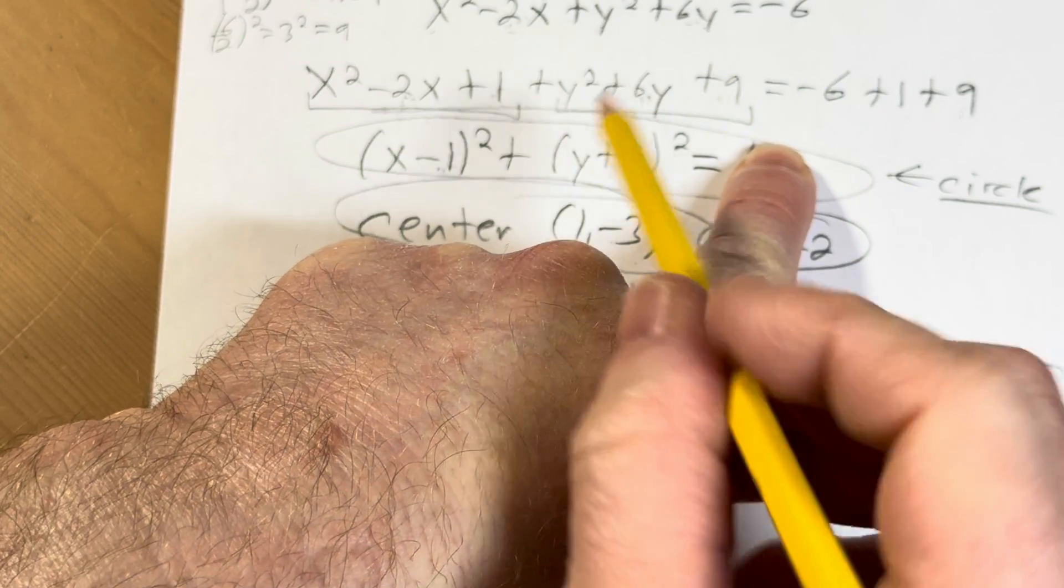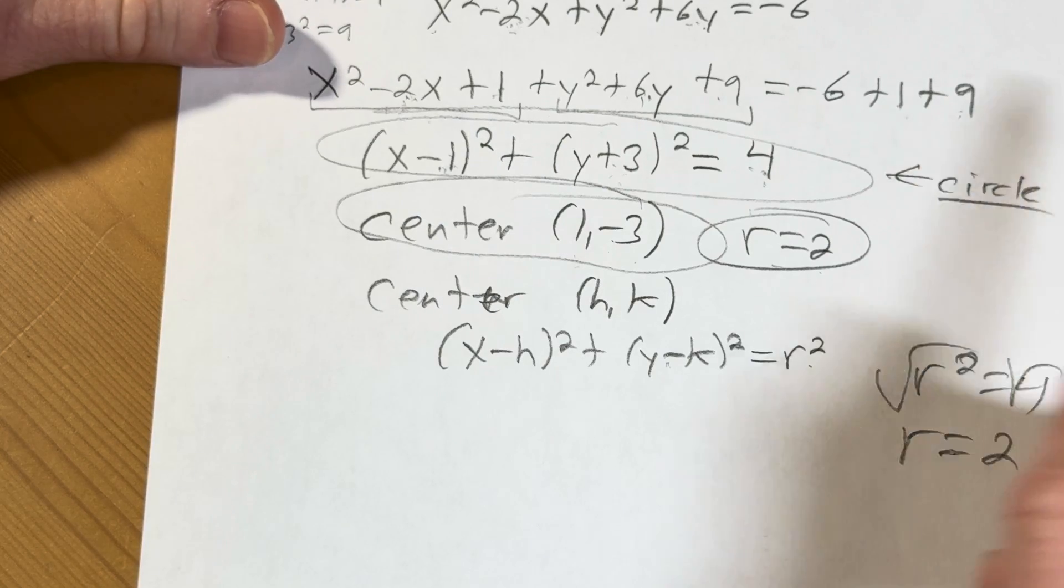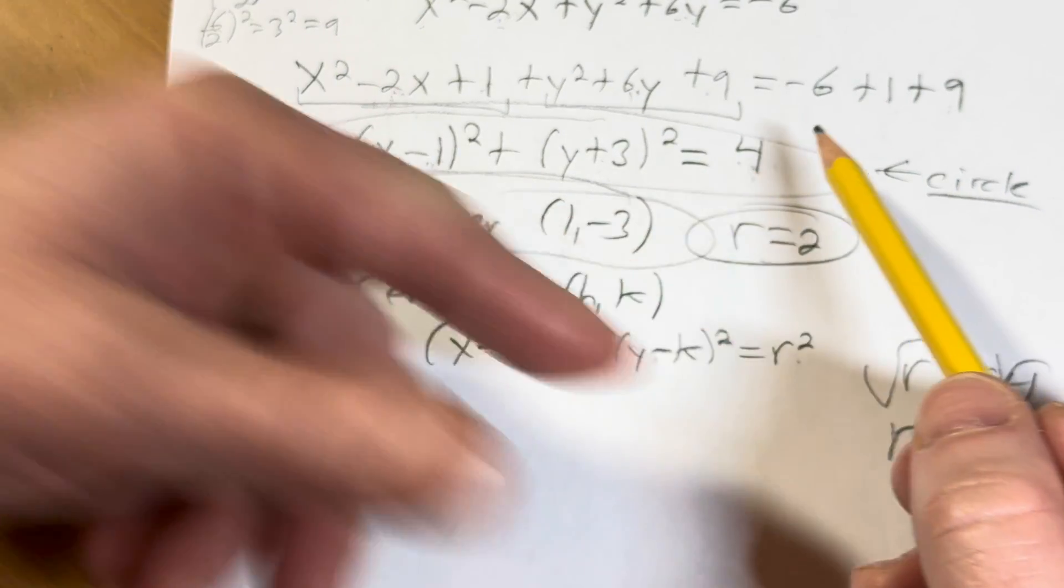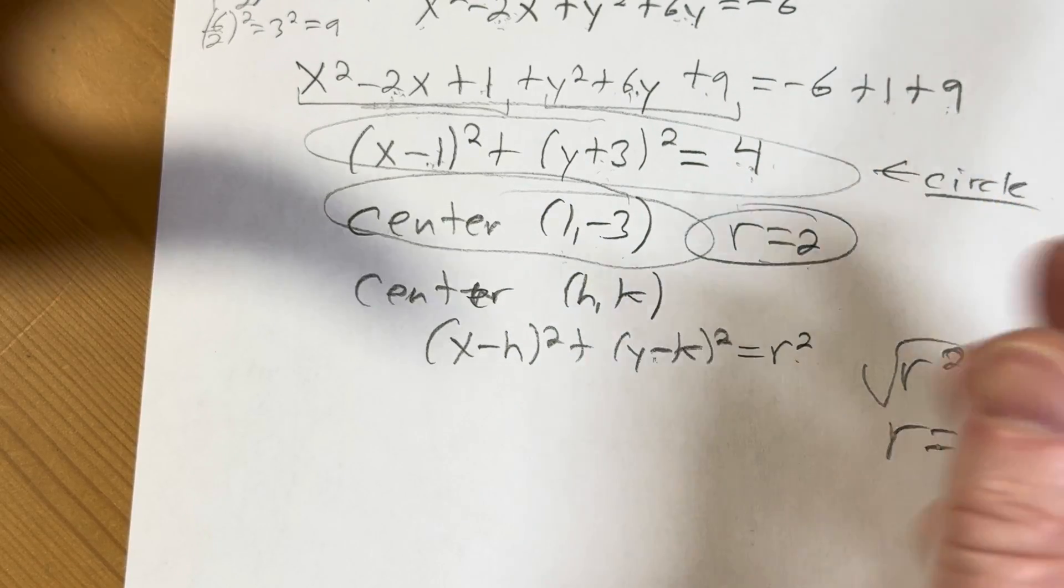Okay, so if we would have gotten, say, 0 here, then it would have been a point on the plane. That's not a circle because we have to have a positive radius. If it would have been a negative number, there would have been no solution to this equation. It would have been just no graph, the empty graph. There'd be no graph.